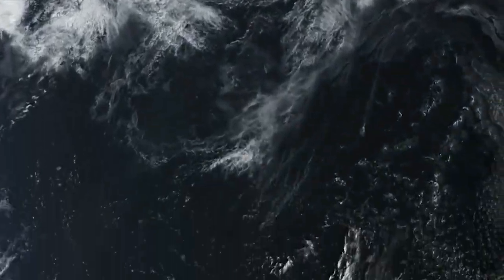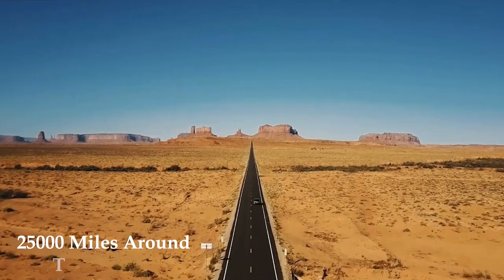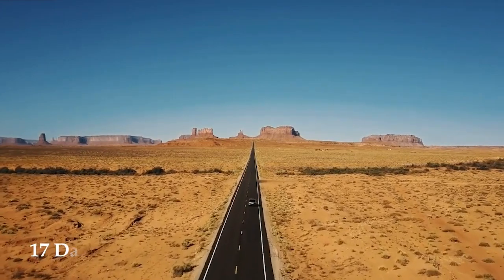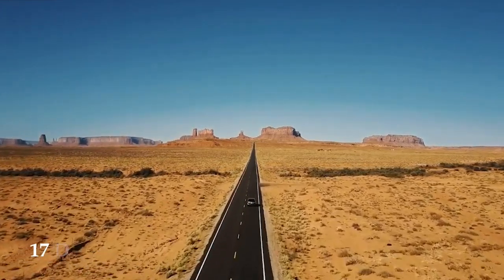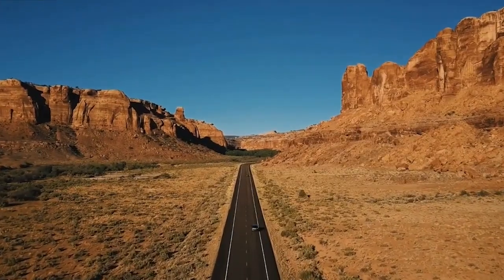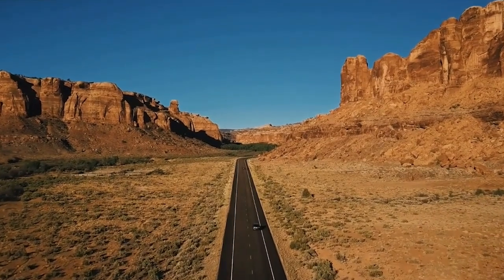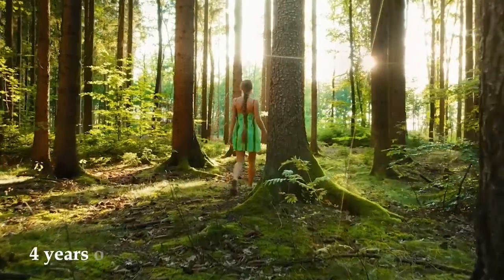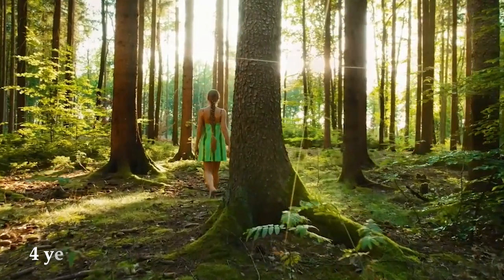Picture this: Earth is 25,000 miles around the equator. If you could drive non-stop, it would take you 17 days to circle it. No sleep, no breaks. Now imagine walking that distance at a normal pace. It would take you about 4 years of non-stop walking just to complete one lap around our planet.